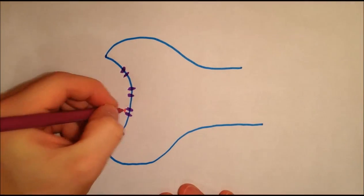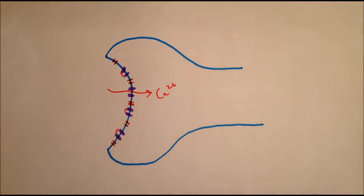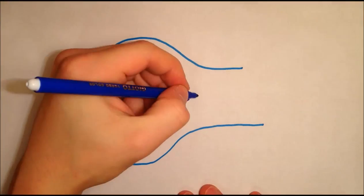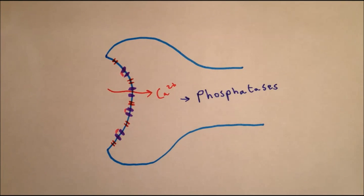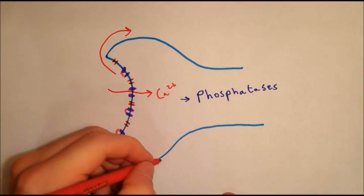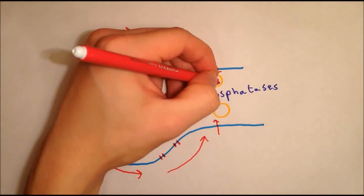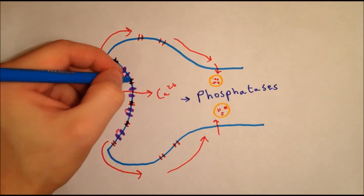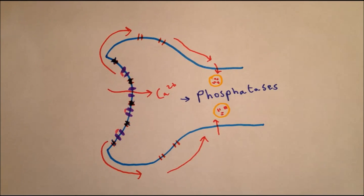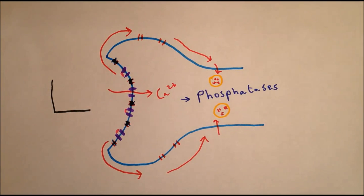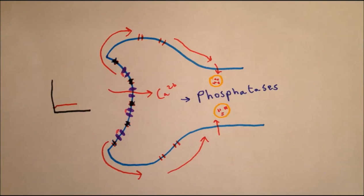A more moderate calcium influx does not cross the critical threshold necessary to activate calcium-dependent kinases, and instead it only activates protein phosphatases. These again alter the recycling of AMPA receptors, but in the opposite way. They increase the endocytosis of AMPA receptors, decreasing the number of them available at the postsynaptic terminal. This means that when glutamate again crosses the synapse, fewer receptors are there to open, less current flows through, and the change in potential is decreased.